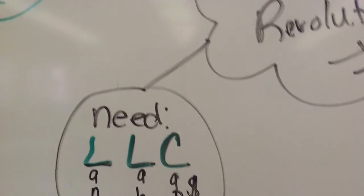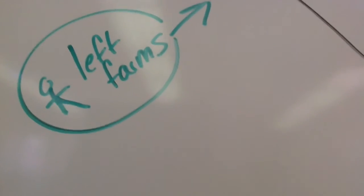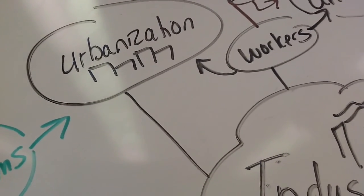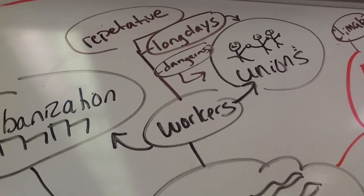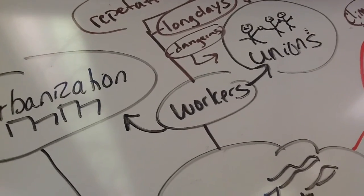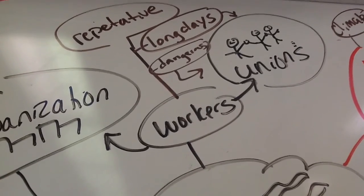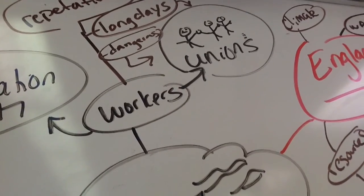As countries were industrializing, fewer people were needed on farms because they were replaced by machines. People left the farms and ended up in the cities, and urbanization grew as the Industrial Revolution took place. Workers faced many problems — their days were long and repetitive, unlike the craftsmanship work of before. Their jobs were dangerous, and for these reasons they started to form labor unions, which grew during this time period.